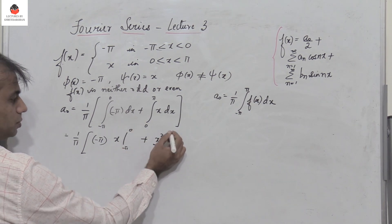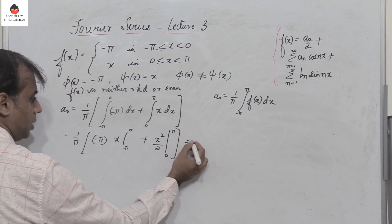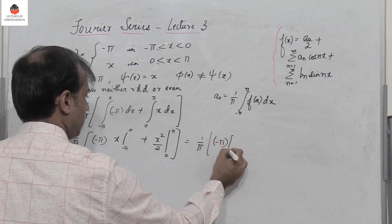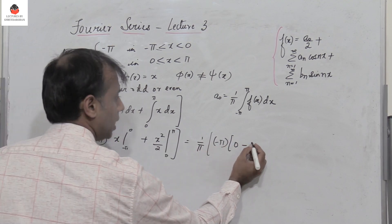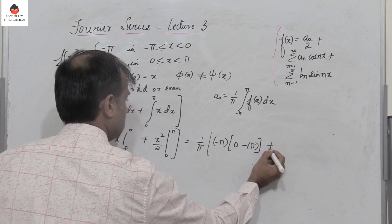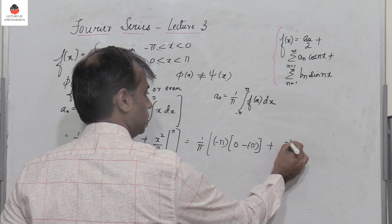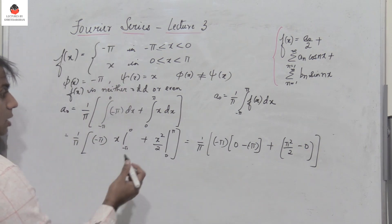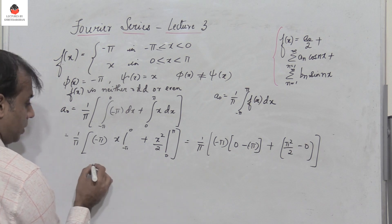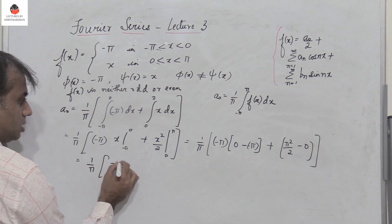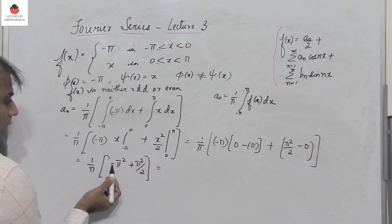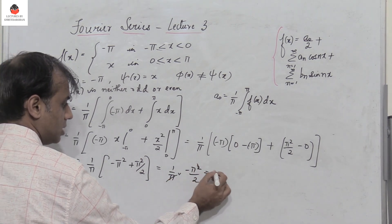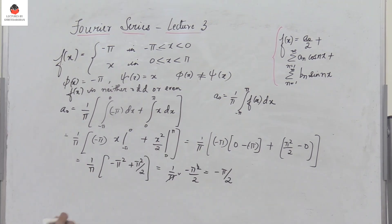Plus x squared by two evaluated between zero and pi. So this is one by pi: minus pi times [0 minus (minus pi)] plus [pi squared by two minus 0]. That gives minus pi squared plus pi squared by two, which equals minus pi squared by two. Then pi and pi cancel, giving a₀ equals minus pi by two.